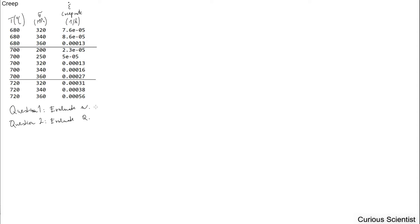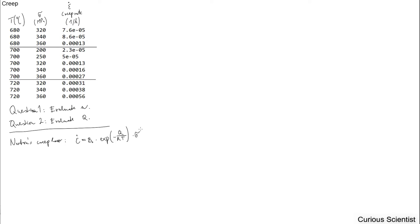So let's start with the equation. We would like to use Norton's creep law, which is the following: epsilon dot equals B₀ times the exponential of negative Q divided by RT, times sigma to the nth power. And R is the universal gas constant here.